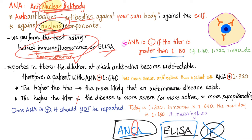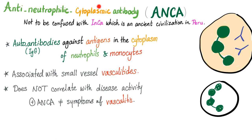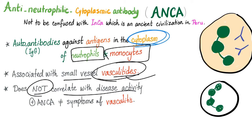ANA is reported in titers — it has to be greater than 1:80 to be positive. The higher the titer, the more likely you have an autoimmune disease, but the higher titer does not correlate with the severity or symptoms of the disease. That's why once ANA is positive, you should not repeat it. Antineutrophilic cytoplasmic antibodies are IgG antibodies against antigens in the cytoplasm of neutrophils and monocytes. They are associated with small vessel vasculitides. ANCA does not correlate with disease activity, same as ANA.